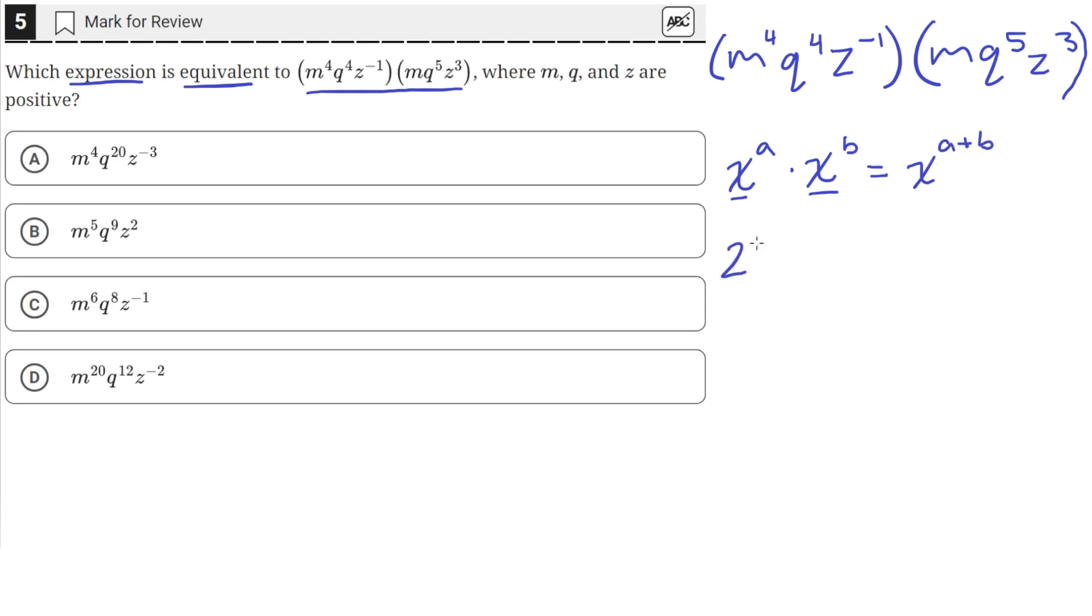So if we had numbers, this would look like, say, you had 2 raised to the third times 2 raised to the second. When you multiply these together, you keep the base the same and add the exponents. So 3 plus 2, which is just 2 raised to the fifth.